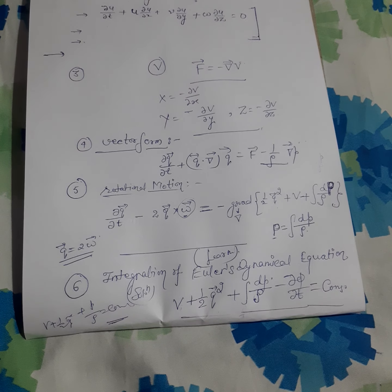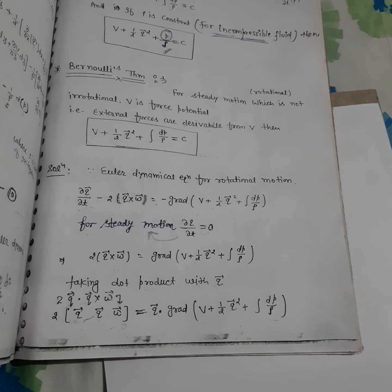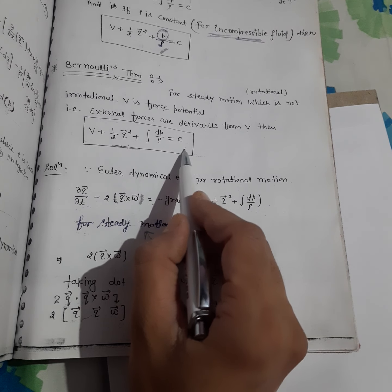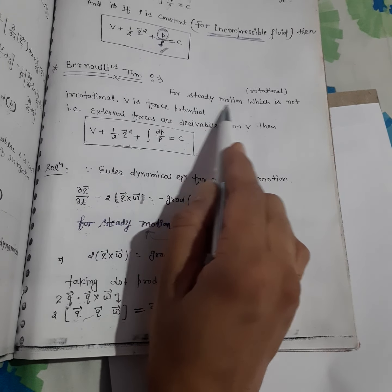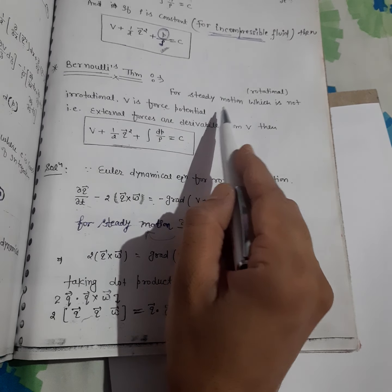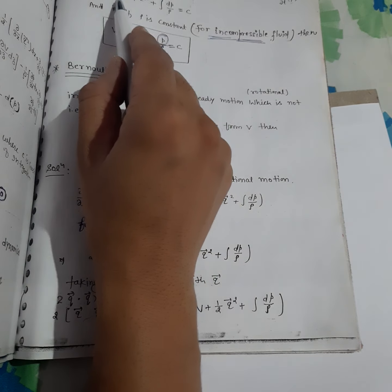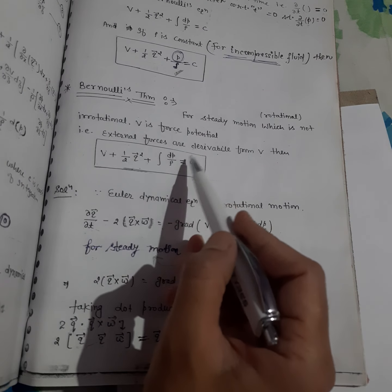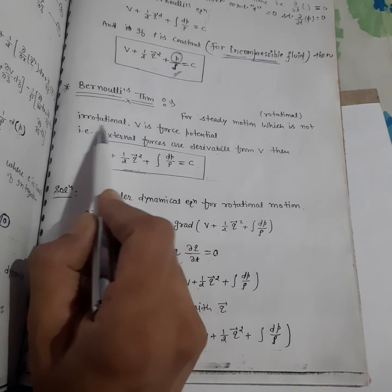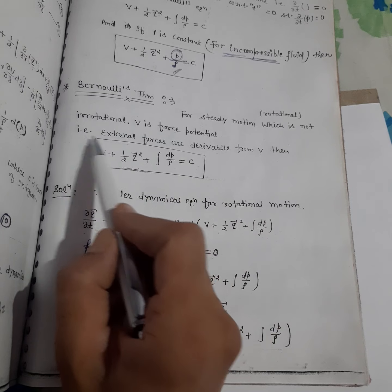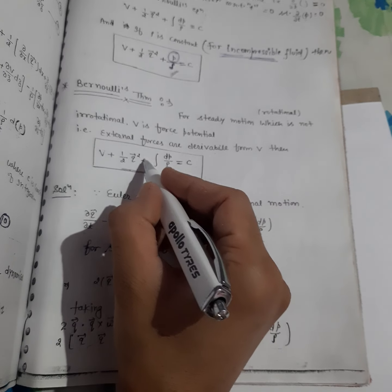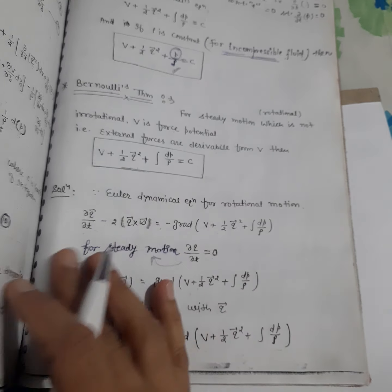Next there is Bernoulli's theorem. Bernoulli's theorem states: V + ½q² + ∫dp/ρ = constant, for steady motion — meaning independent of time t, so differentiation with respect to t equals 0. This holds for steady motion which is not rotational. V is the force potential such that external forces are derivable from V. Then V + ½q² + ∫dp/ρ = constant.